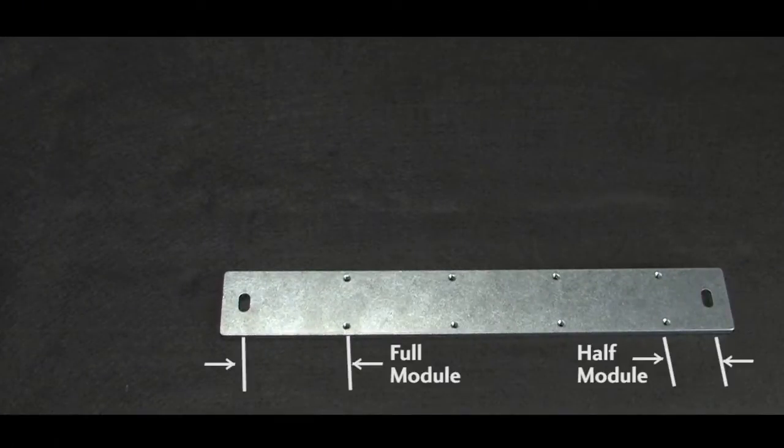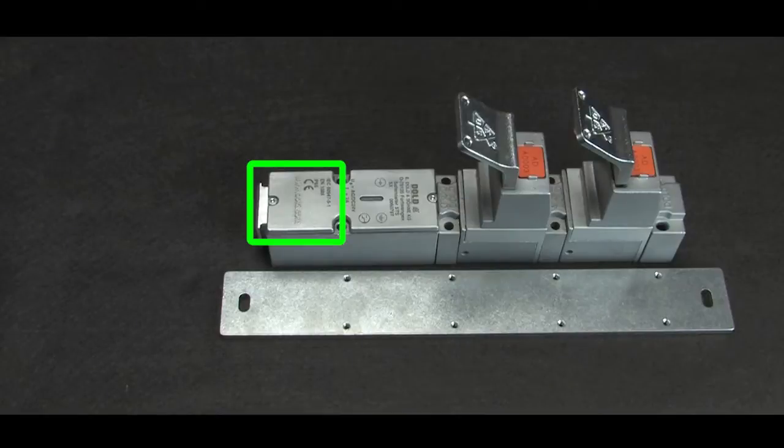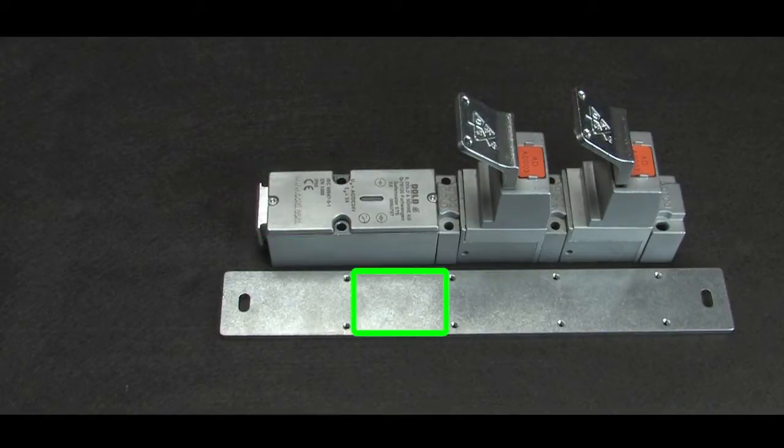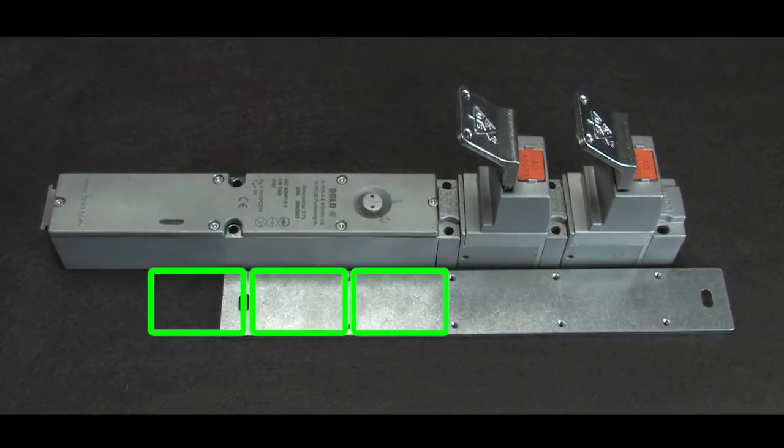Note that there is extra room at one end of the mounting plate to accommodate the extra length of the contact and solenoid modules. And while the contact module takes up just one position on the mounting plate, the solenoid module takes three. So don't forget to add that extra length when you are ordering mounting plates – if you are using a solenoid module.